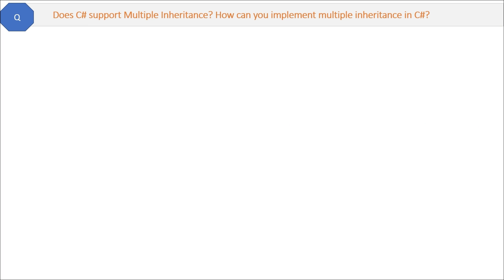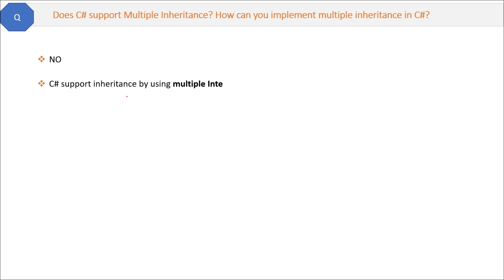Question one: Does C# support multiple inheritance? How can you implement multiple inheritance in C#? The answer is no — C# does not support multiple inheritance. However, there is an alternative way: C# supports inheritance by using multiple interfaces.